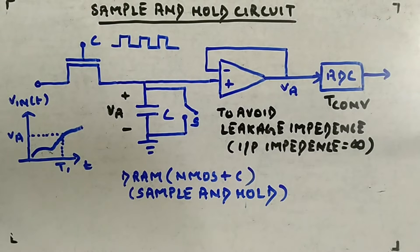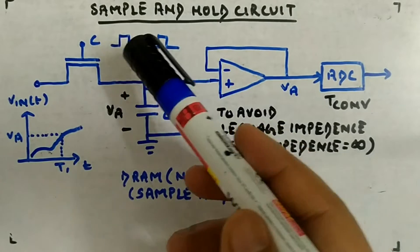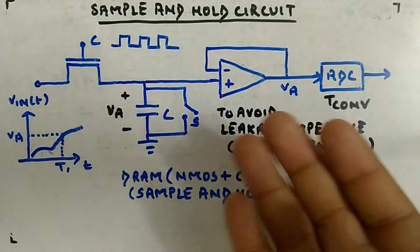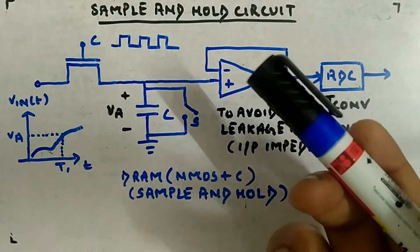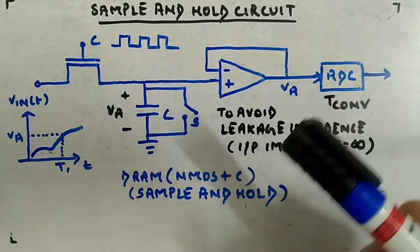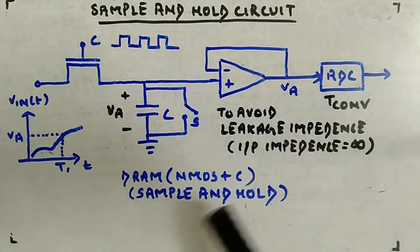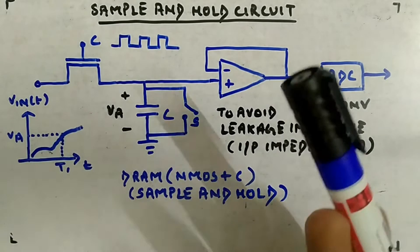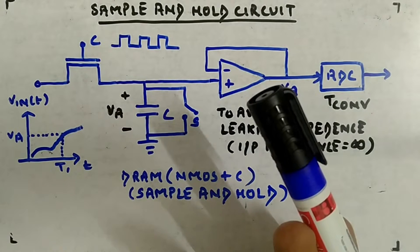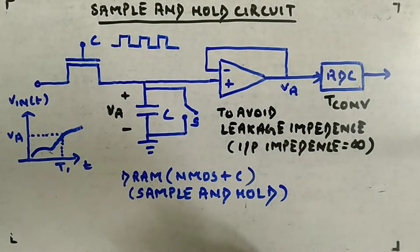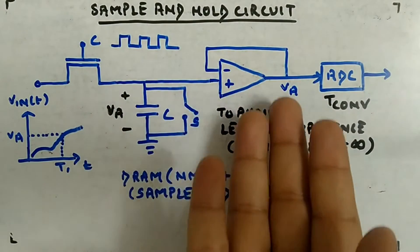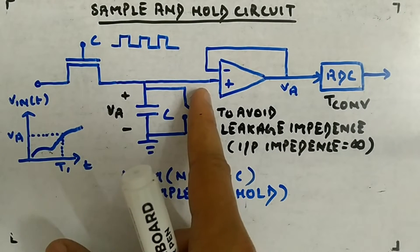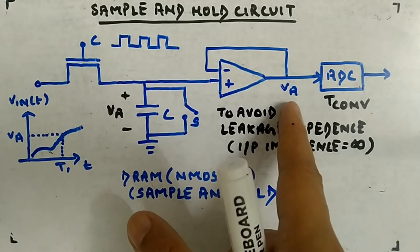I'm going to close the topic of analog-to-digital conversion with this last topic called sample and hold circuit. As the name suggests, sample means sampling and hold means holding the voltage. This circuitry samples as well as holds the voltage. In this arrangement you can see an NMOS — if you're not aware of NMOS, you can take my course called analog electronics. This is a voltage follower, which takes whatever voltage is at the input terminal and presents it at the output as well.